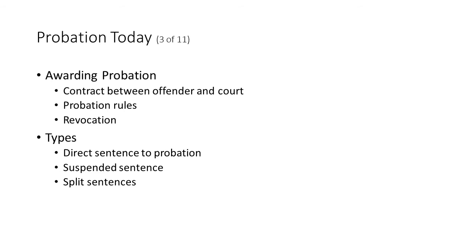What was just described was a direct sentence to probation scenario. A suspended sentence is when the court actually imposes a term of incarceration but suspends it on the condition that the offender successfully complete probation. So a judge might say for a misdemeanor conviction: 'I'm sentencing you to one year in the county jail — that is suspended on the condition that you complete three years on probation.' If there is a violation partway through, the court can revoke probation and sentence the offender to serve that year in jail.